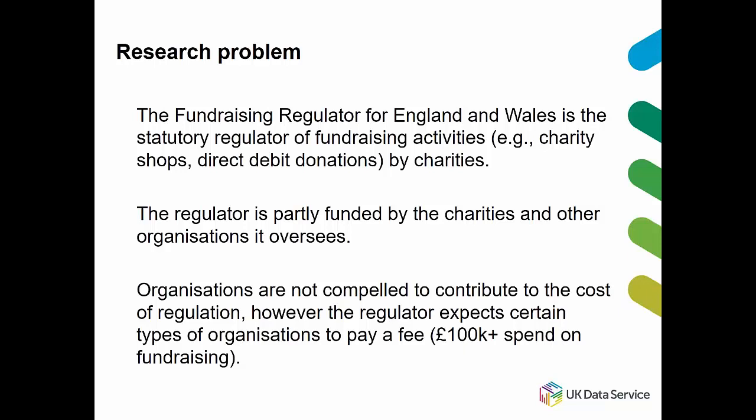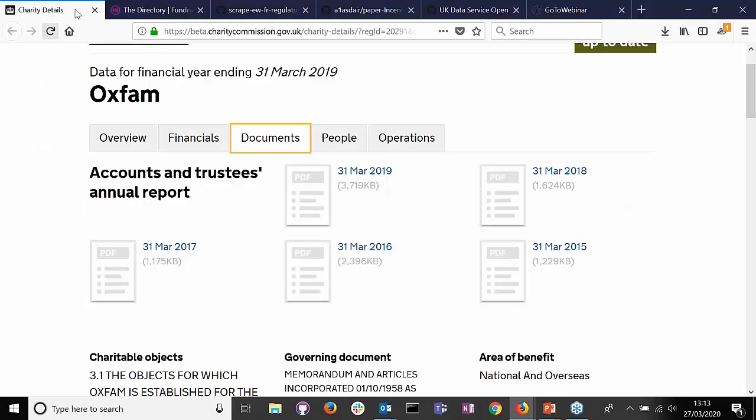Our first method was requesting data from the regulator directly. They were very helpful and provided a PDF file of all charities that had paid the fee at the time of our request. However, the list already contained over a thousand records, requiring considerable manual input to extract and convert to a CSV file. This also meant our list was essentially out of date once transferred to us. Therefore we needed a different method to get hold of the data.